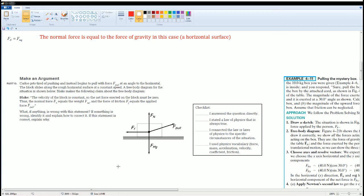Part C. You can read the scenario to yourself. But Blake claims that the velocity of the block is constant, so the net force acting on the block must be zero. Thus, the normal force F_N is equal to the weight, which they wrote F subscript mg, the force of friction equals the applied force, which is the F pull.